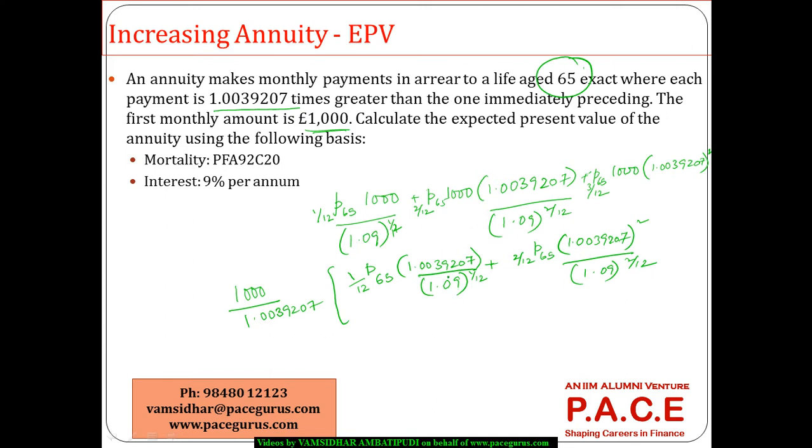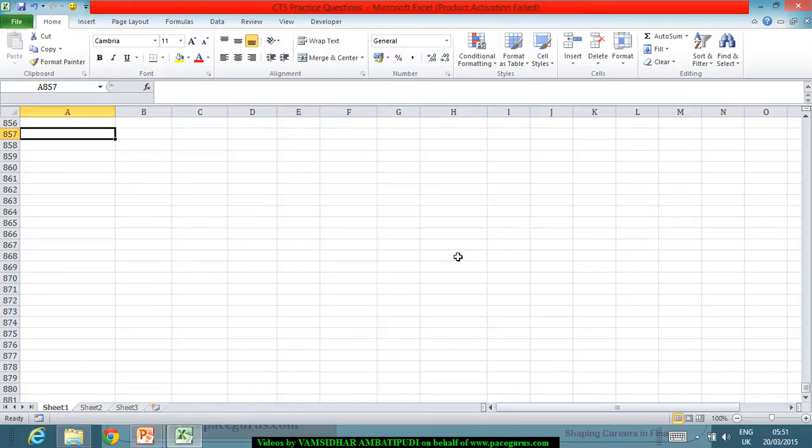So 1.0039207, I better want to write it as a power of something to the power 1 by 12. Or if I simplify this, let me try to simplify this. To get the new interest rate, the new I, I will write it as 1.0039207 divided by 1.09 to the power 1 by 12.